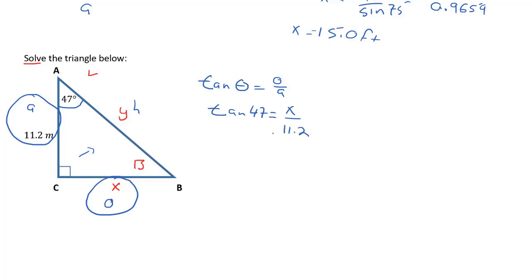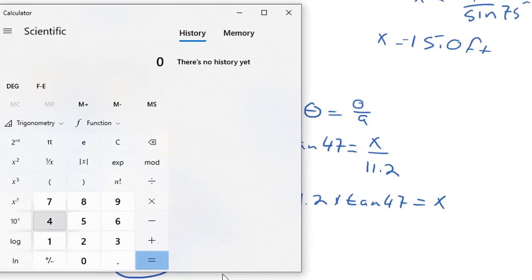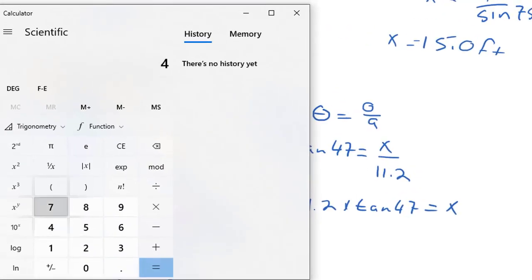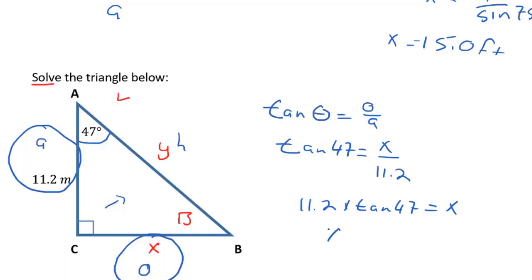I'm going to do my cross multiplying to isolate x, and I end up getting 11.2 times tan of 47 is going to equal x. Pulling up my calculator, I'm going to start by calculating the tangent of 47. So I type in 47 first, trig, and then tan, and then times 11.2. And that tells me that x is going to equal 12.0.